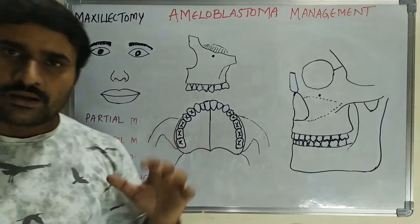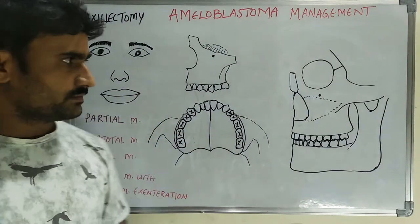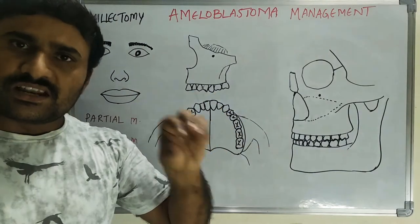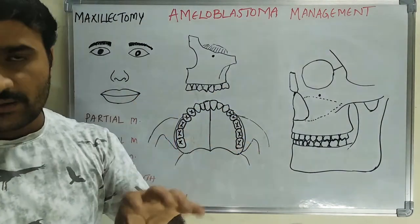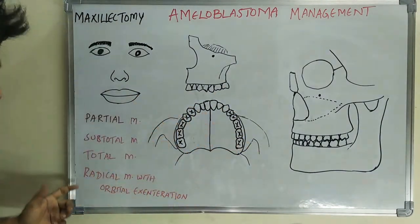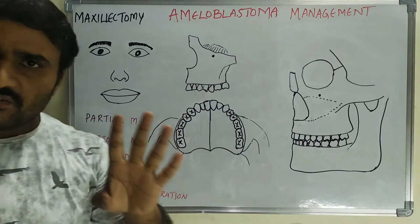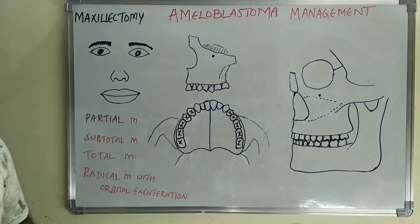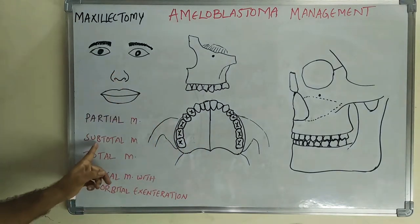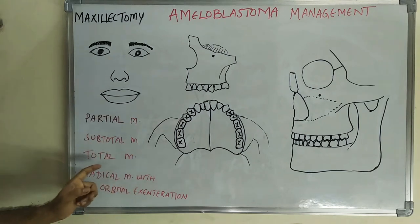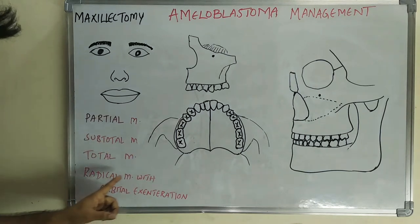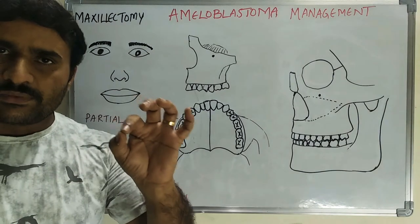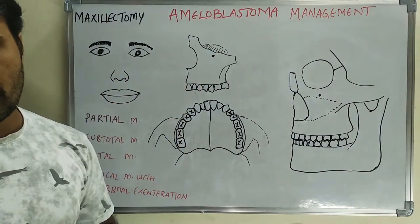Now we will discuss about maxillectomy. Maxillectomy is nothing but removal of the maxilla. There are four varieties of maxillectomy: the first one is partial maxillectomy, subtotal maxillectomy, total maxillectomy, and radical maxillectomy with orbital exenteration.